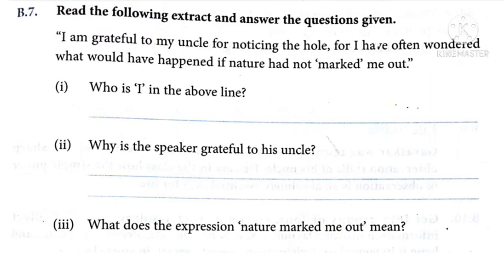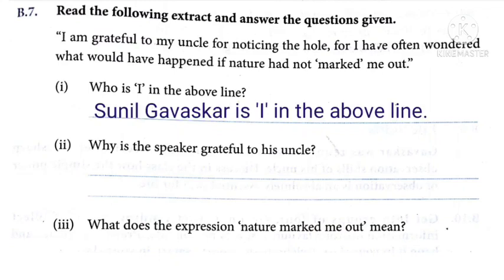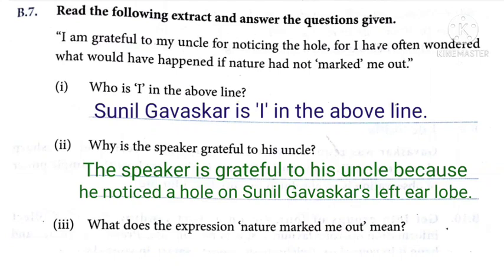The first question is: who is 'I' in the above line? 'I' is Sunil Gavaskar, because he was himself thankful to his uncle. Number two: why is the speaker grateful to his uncle? The meaning of 'grateful' is thankful. The speaker is thankful to his uncle because he noticed a hole on his left ear lobe — that is why he is thankful to his uncle.